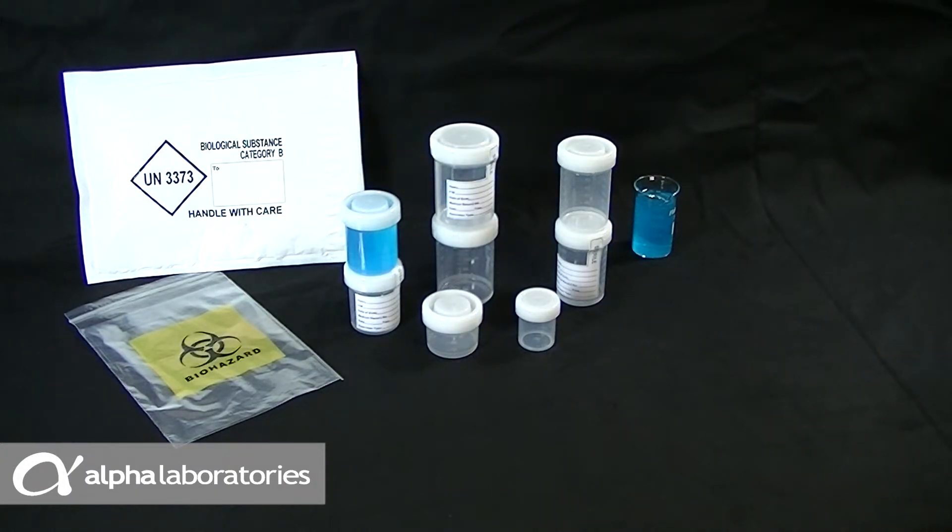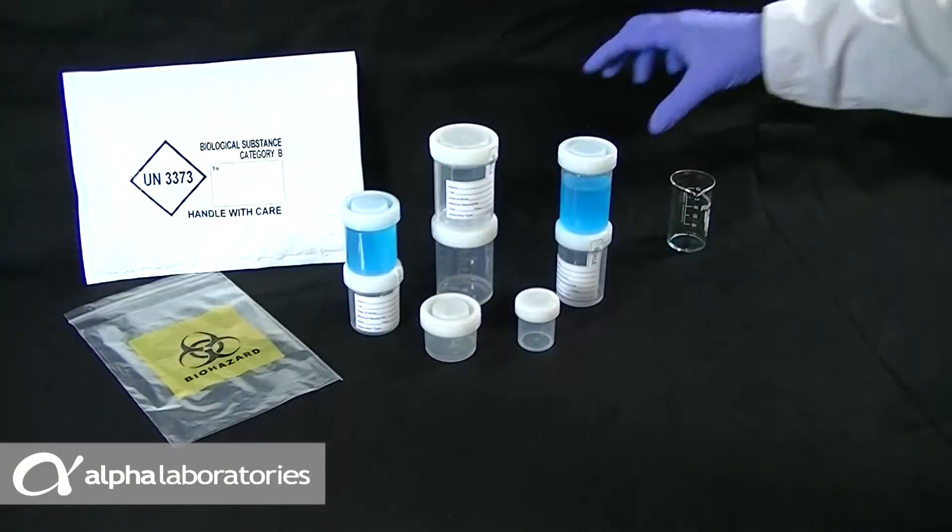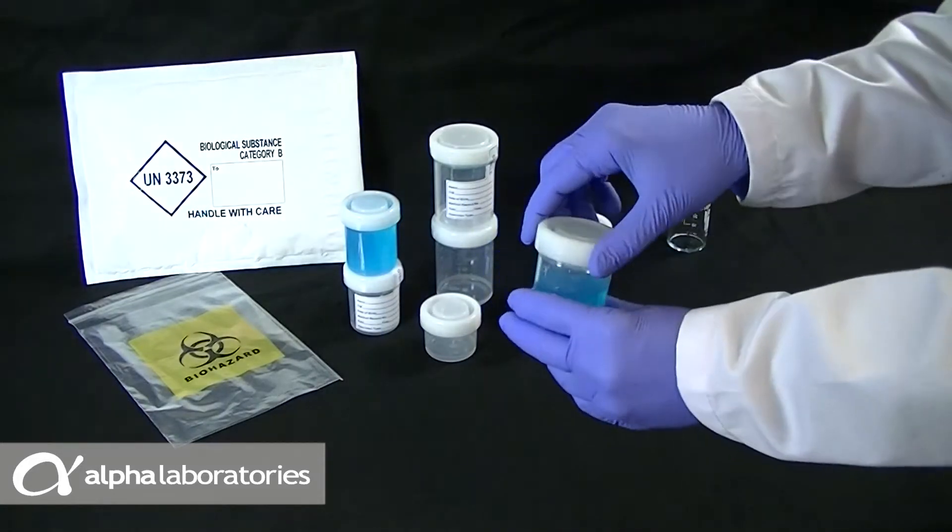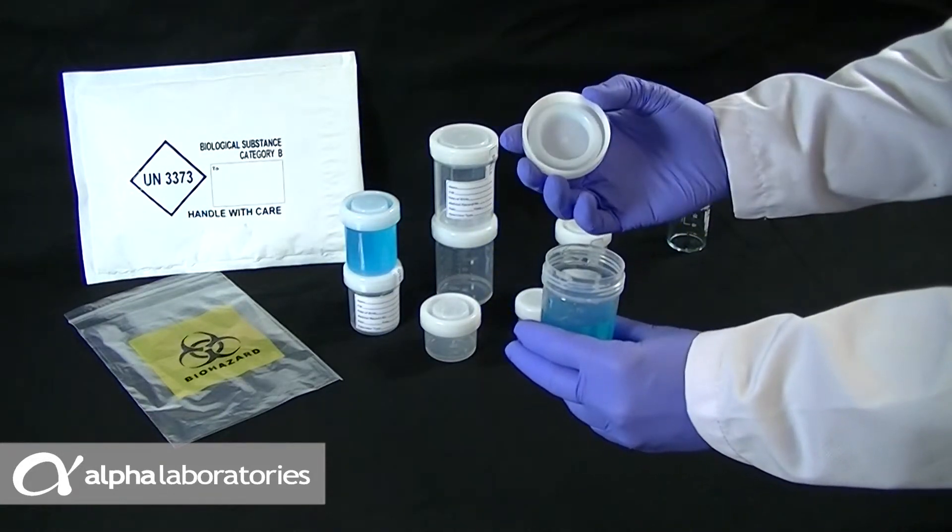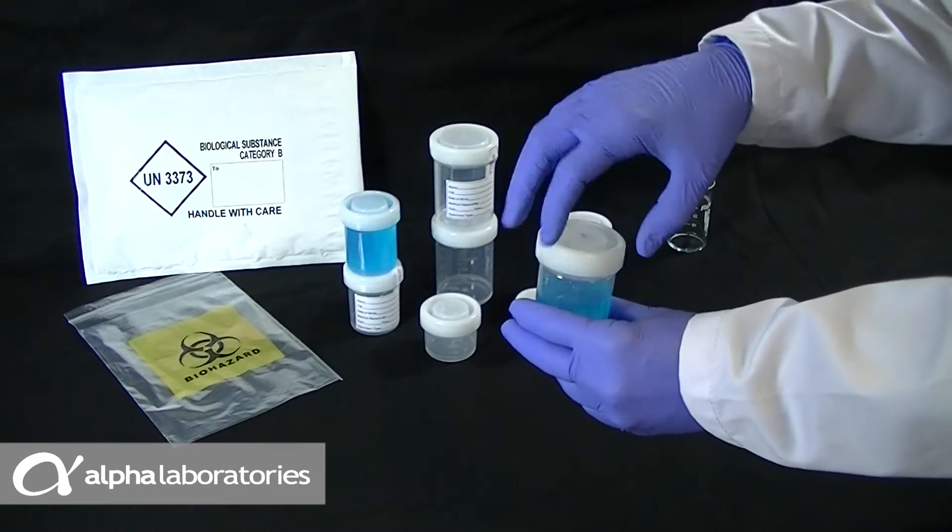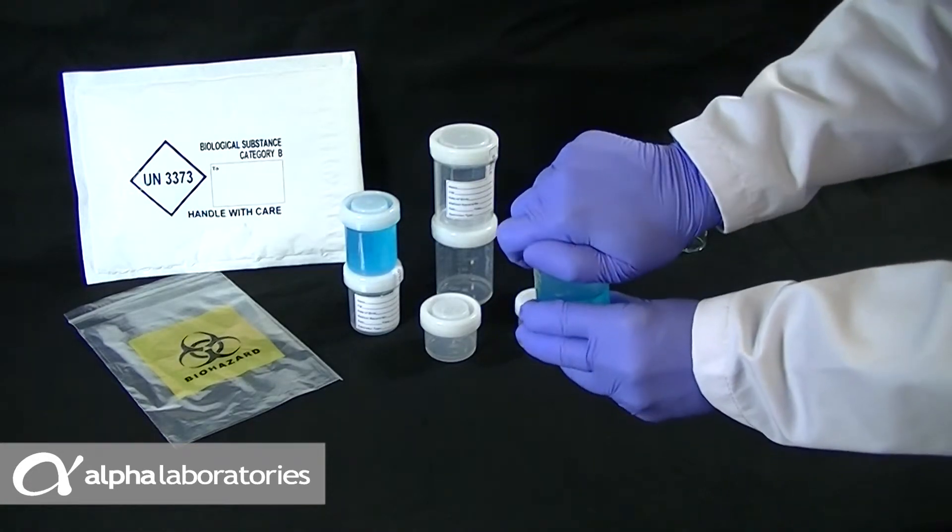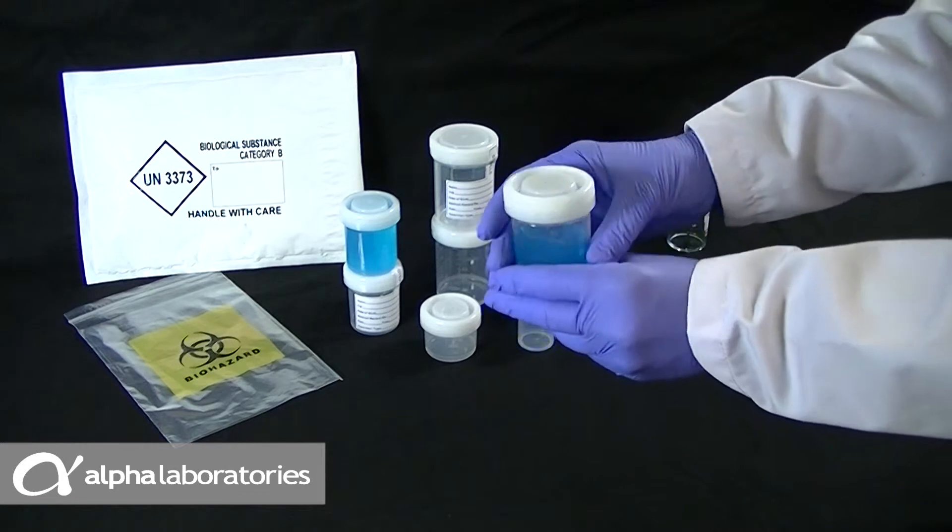The EasyGrip polypropylene cap and container ensure safe handling even when wearing gloves. The dual threaded superpositive seal fully engages in the last 12 degrees of turn to make them completely leak proof.